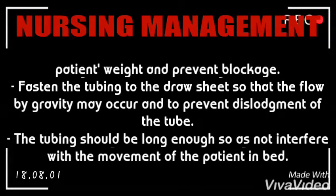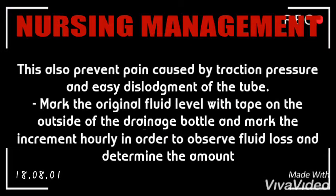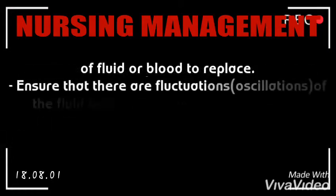The tubing should be long enough so as not to interfere with the movement of the patient in bed. This also prevents pain caused by traction, pressure, and easy dislodgement of the tube. Mark the original fluid level with tape on the outside of the drainage bottle and mark the increments hourly in order to observe fluid load and determine the amount of fluid or blood to replace.